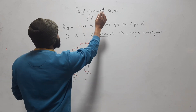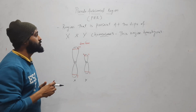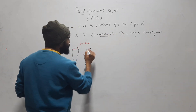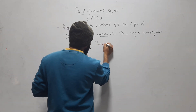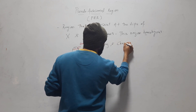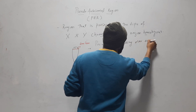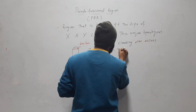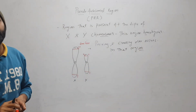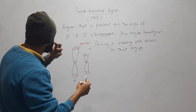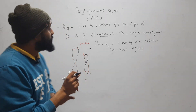Both X and Y chromosomes have the same genes in this region, so it is called the pseudo autosomal region. Because it is homologous, during meiosis, pairing and crossing over occurs in that region — they pair up because they share the same genes.